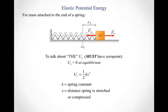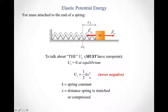One thing to highlight: with gravitational potential energy, we saw it could be positive, negative, or zero. The elastic potential energy can never be negative. It can be zero if the object is at equilibrium — plug in zero, you get zero. But move in either the positive or negative direction, both values of x get squared. The squaring removes the sign, so one-half kx squared is always a positive term regardless of what x is. You cannot have negative elastic potential energies using this equation.